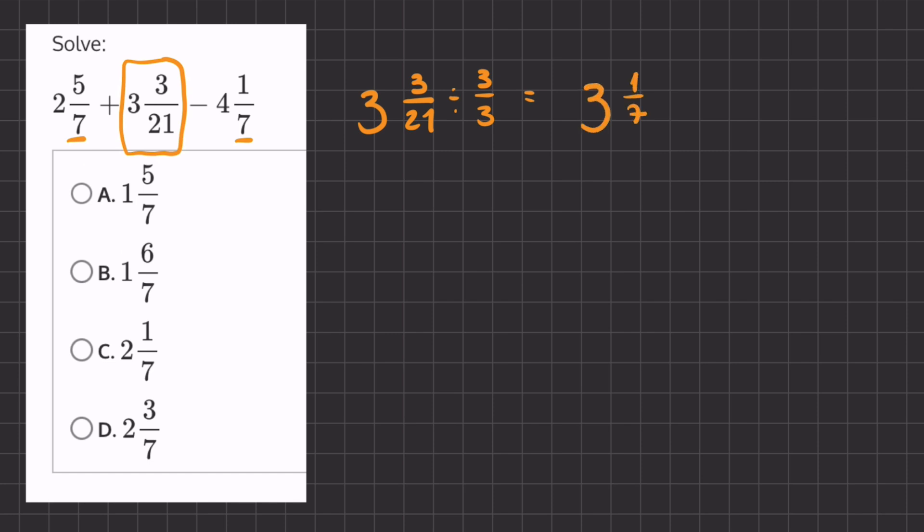Now all of our fractions have common denominators, and now we can add all of them together. We have 2 and 5 over 7, plus 3 and 1 over 7, minus 4 and 1 over 7.